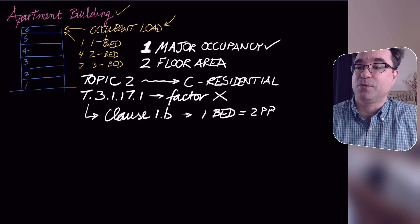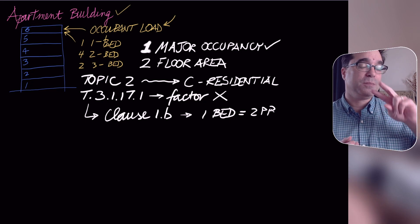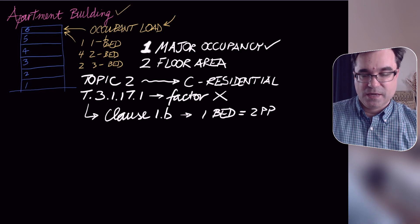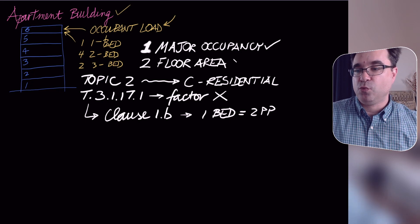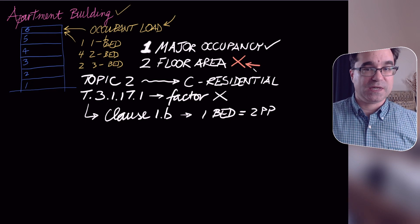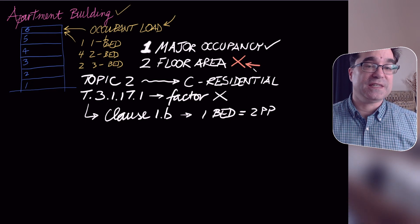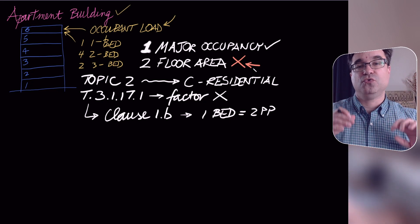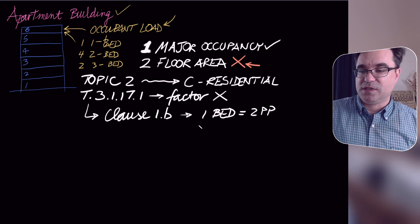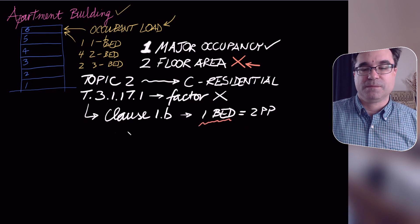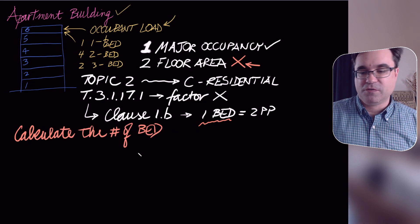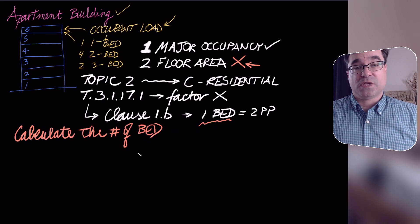The trick with apartments is that we calculate the number of bedrooms and multiply by two to get the number of people. This also means we don't need a floor area for apartments — it has nothing to do with the area of the space, only with the number of bedrooms.